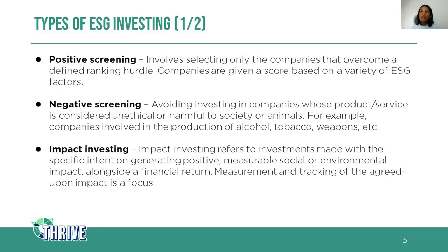This is one of the criticisms which I will speak about in more detail soon. Moving on to the next investing type: negative screening. This is avoiding investing in companies whose products or services are considered unethical or harmful to society or animals — for example, companies involved in the production of alcohol, tobacco, weapons, etc. These companies are screened out of the fund.